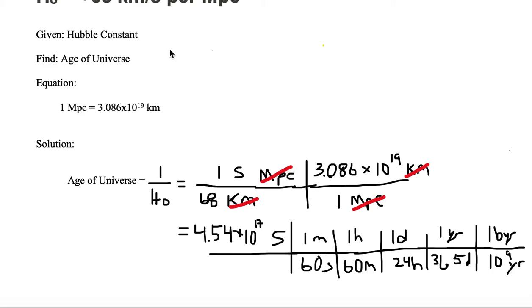So let's get rid of like units. Seconds cancels with seconds, minutes cancels with minutes, hours cancels with hours, days cancels with days, years cancels with years, and we'll be left with billions of years.